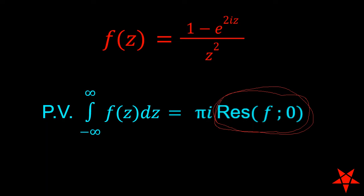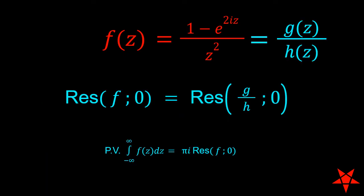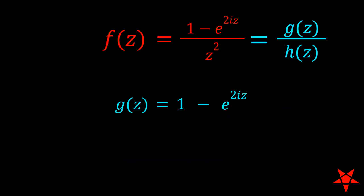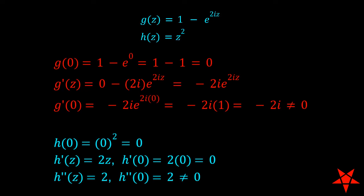If your function happens to have zeros in both the numerator and denominator, then a good first line of attack in residue calculation is frequently to label the top and bottom portions as g and h respectively. So, for our purposes, the function g of z is 1 minus e to the 2i z, and h of z is equal to z squared. Next, we evaluate g and h at z equals zero and do the same for their respective first derivatives and all higher derivatives until we obtain nonzero values for each function at the origin.